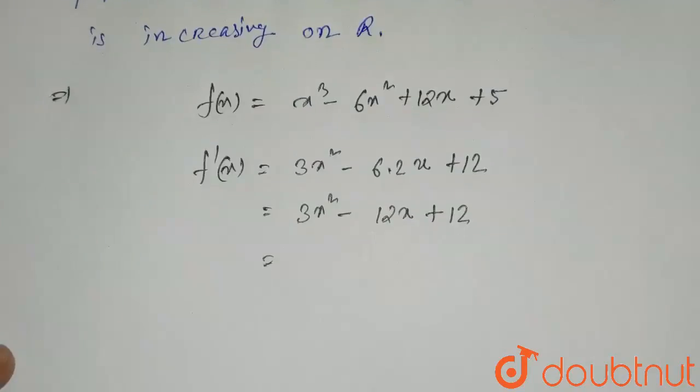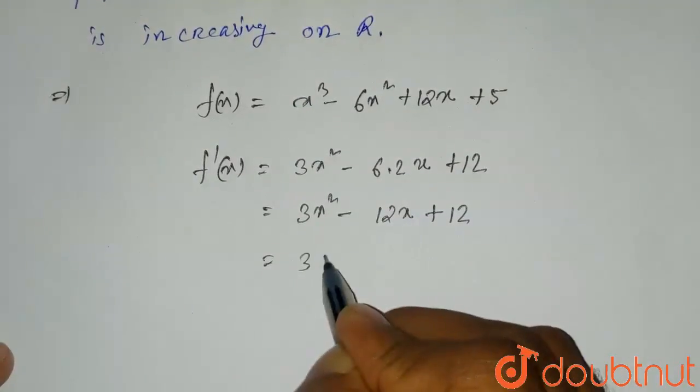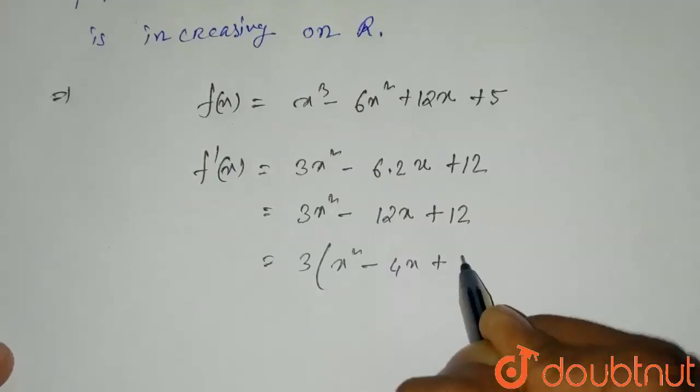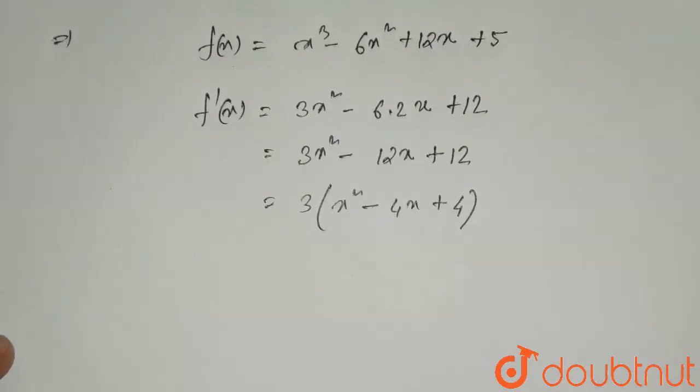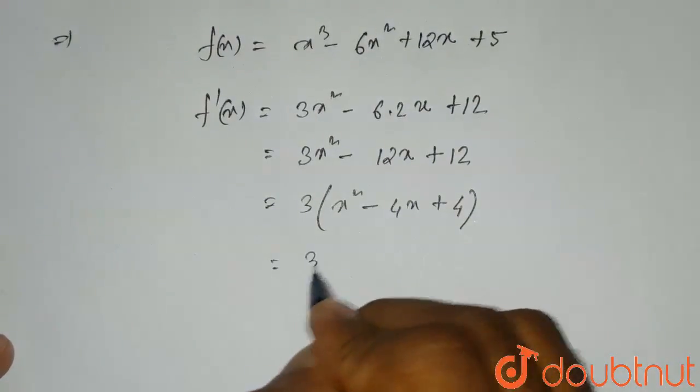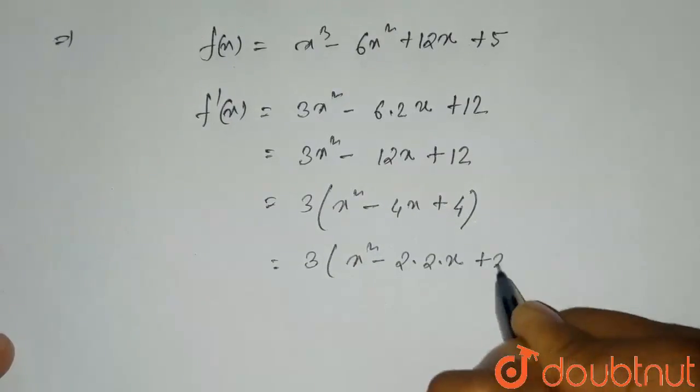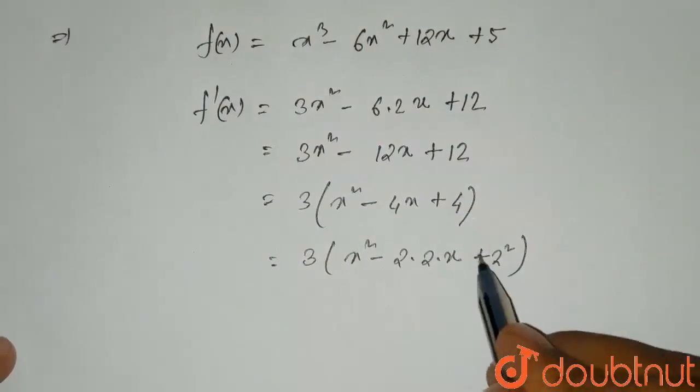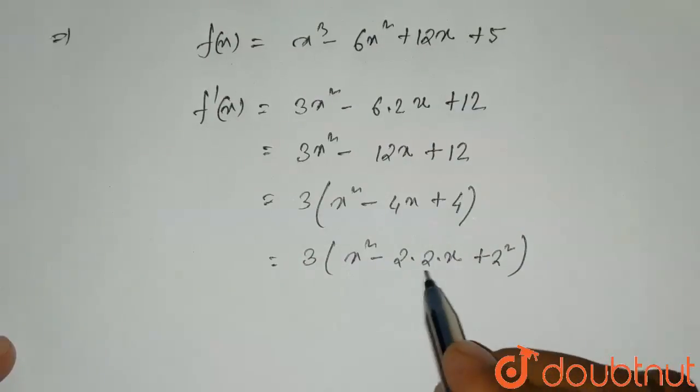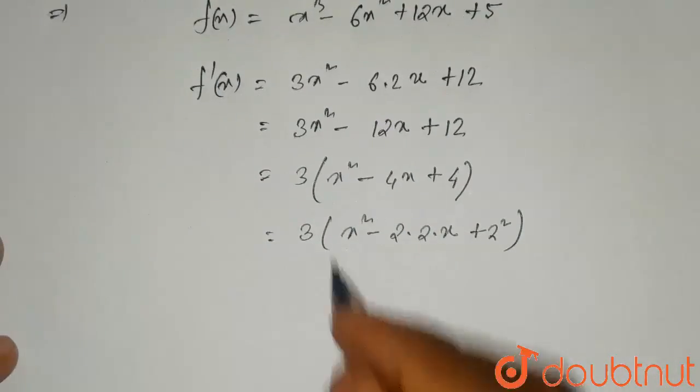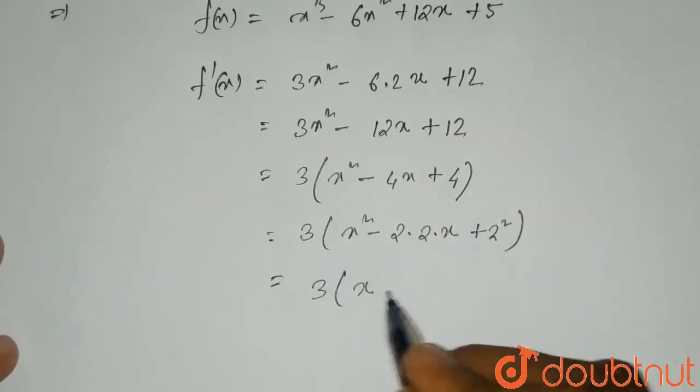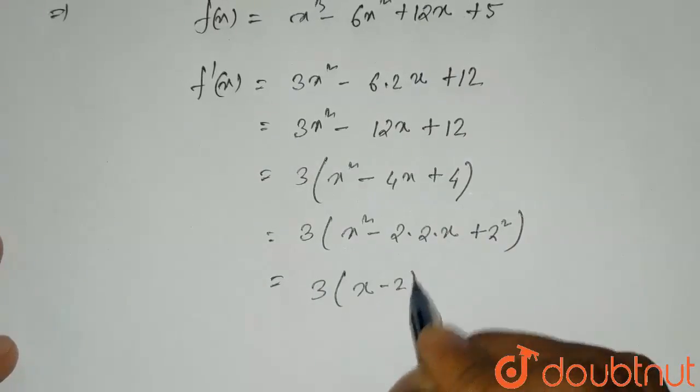Now this equals, if we take 3 common, 3(x² - 4x + 4). This can be written as 3(x² - 2·2·x + 2²). 4 can be written as 2² and 4x can be written as 2·2·x. Which equals 3(x - 2)².